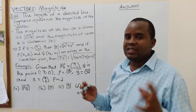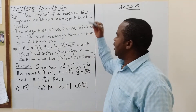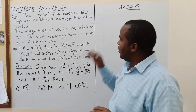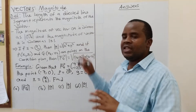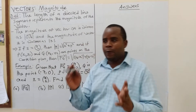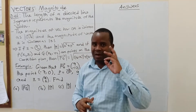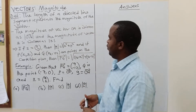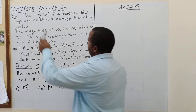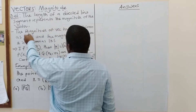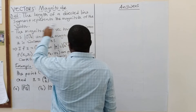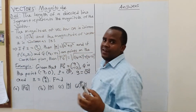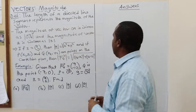Remember, a vector is made up of both magnitude and direction. So what is magnitude? We know direction is indicated by an arrow, but how do you find the magnitude? We are saying the length of a directed line segment represents the magnitude of a vector.